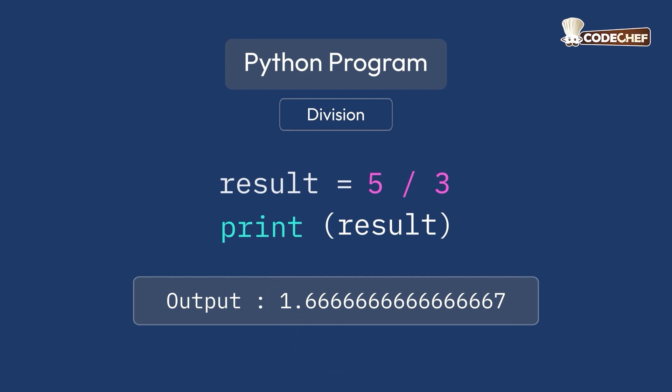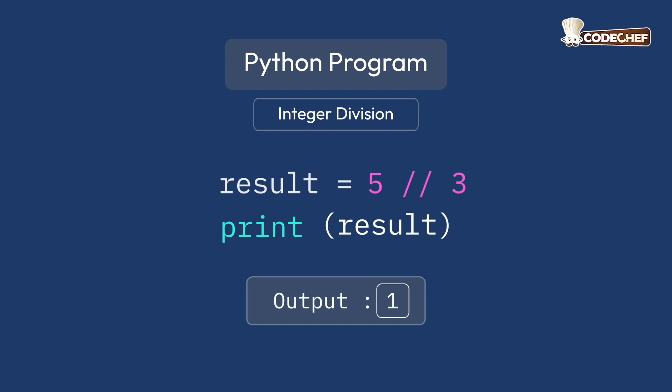If you want the result to be an integer, use the integer division operator, which is by using double slash. The result of this operation will be 1 instead of 1.666667.